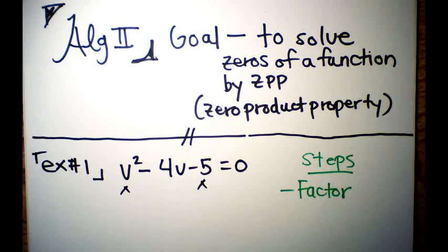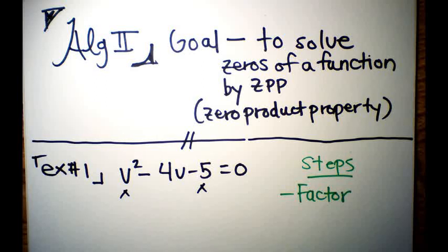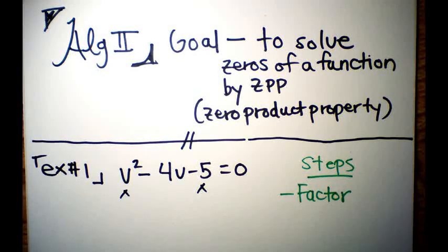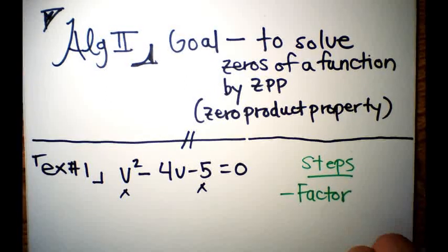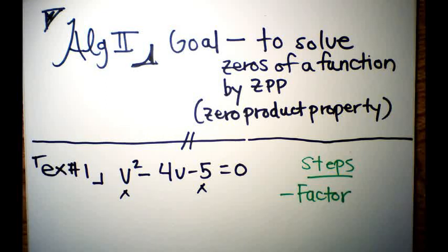Welcome to another edition of Flip the Classroom / Learning from the Internet. This is geared towards Algebra 2 but is applicable to Algebra 1, Pre-Algebra, Trigonometry, and higher maths as well. The goal today is to solve zeros of a function by ZPP — the Zero Product Property.